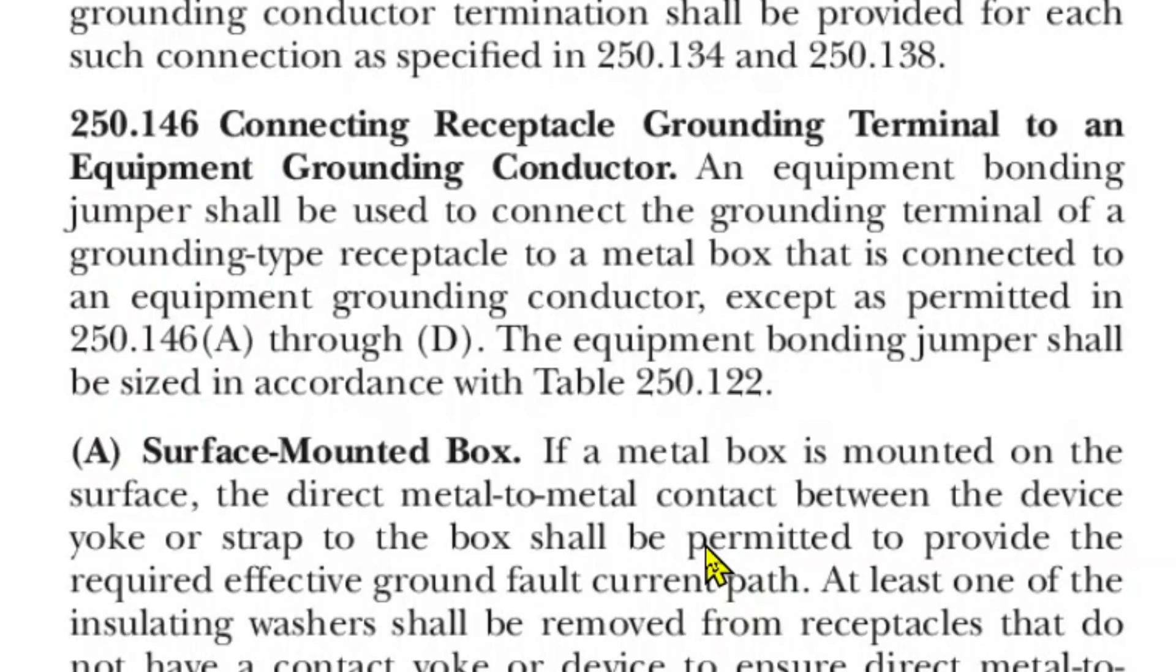Here we are at the 2020 NEC Article 250.146 Connecting Receptacle Grounding Terminal to an Equipment Grounding Conductor. An equipment bonding jumper shall be used to connect the grounding terminal of a grounding type receptacle to a metal box that is connected to an equipment grounding conductor, except as permitted in Article 250.146A through D. The equipment bonding jumper shall be sized in accordance with Table 250.122.